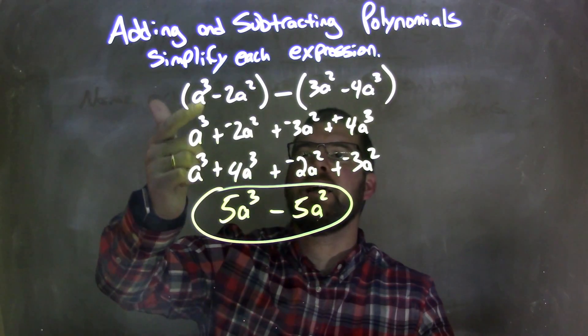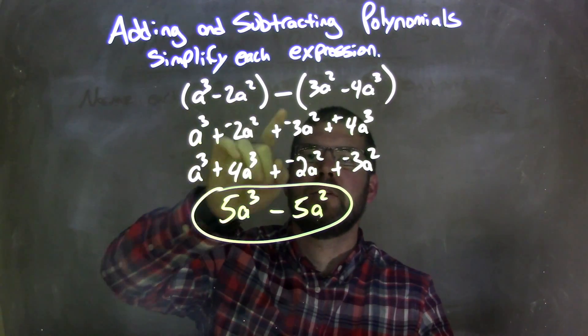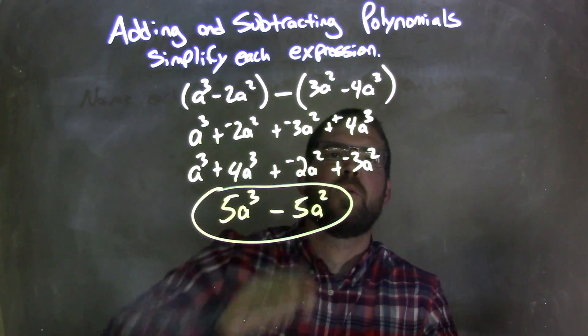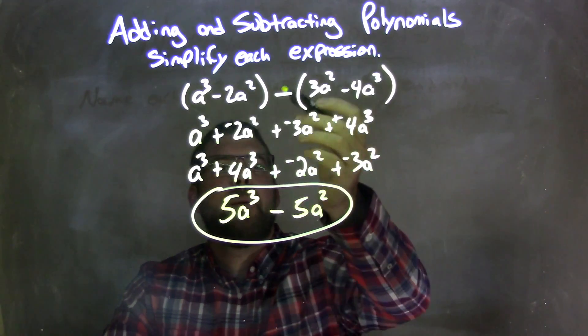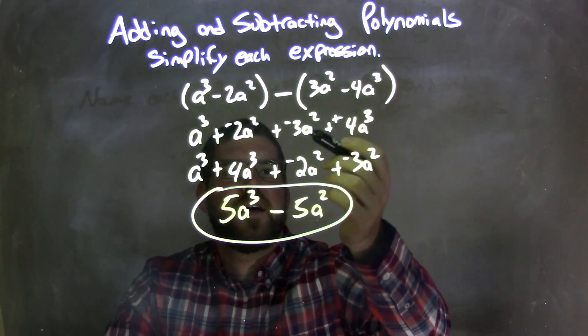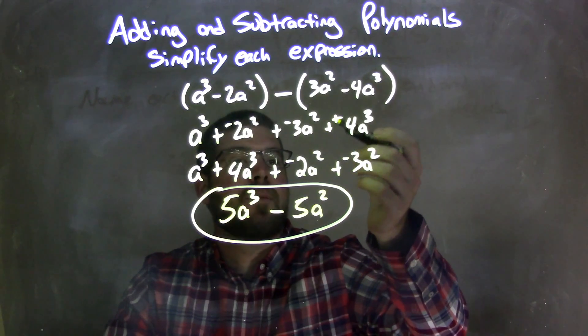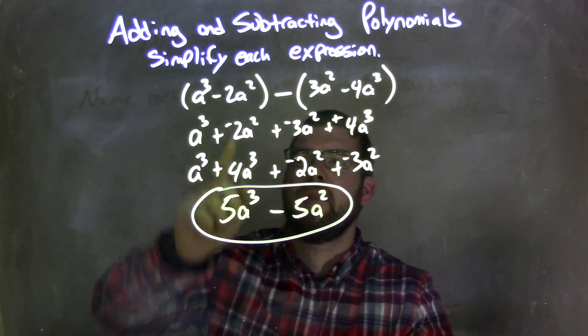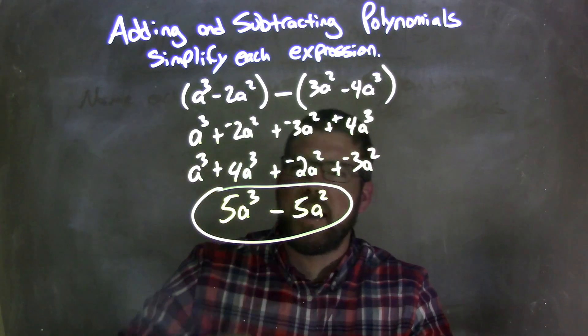So let's recap. We're given a to the third minus 2a squared parentheses, minus parentheses 3a squared minus 4a to the third and parentheses. I distributed that minus sign across to get a plus a negative 3a squared, and then plus a positive 4a to the third. And then this one, my minus 2a squared, I like to make it plus a negative.